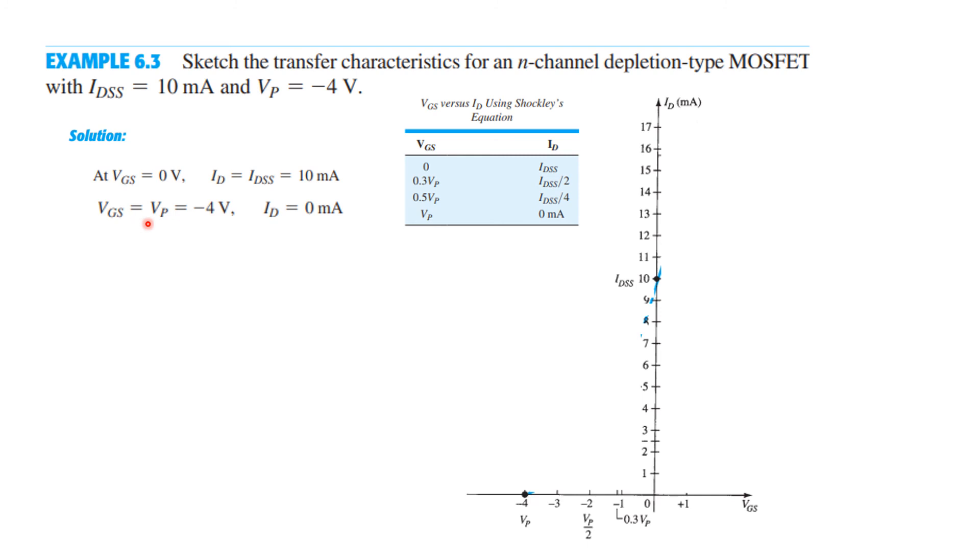And the second will identify that, so VGS is minus 4 when ID is 0. So this is the minus 4 point and the current now you can see is 0. So these were the two extreme points, now we will identify the two middle points.